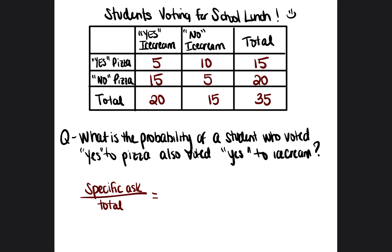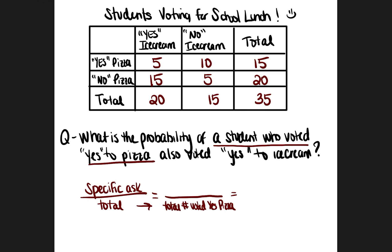The question asks: what is the probability of a student who voted yes to pizza? So out of all the students who voted yes to pizza, the bottom of our fraction is going to be the total number of students who voted yes to pizza. I recommend writing this in on your piece of paper. Then the specific ask is, out of that group, how many also voted yes to ice cream — that goes on top.